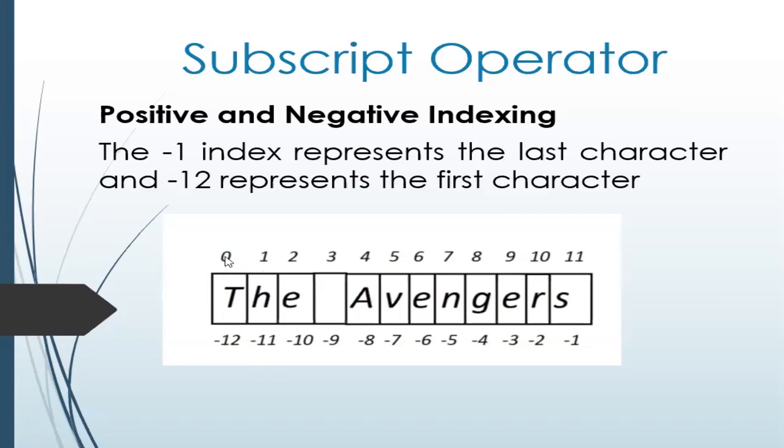When we say 'T', it is at position 0 till the 11th position. When we go reverse, that is 'S' is minus 1 to minus 12. So we don't have 0 over here. We have minus 1 to minus 12, and for positive indexing we have 0 to 11. Any questions, anyone? You can ask me.